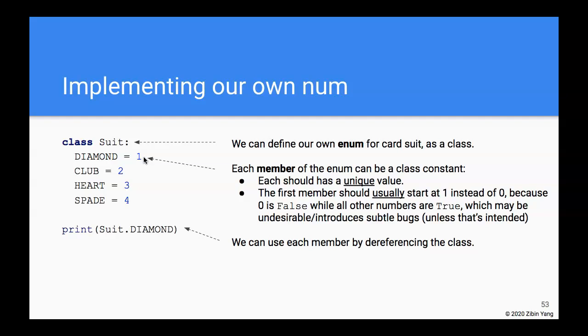The reason for that is 0 actually has a very special meaning that is different from the rest of the numbers. Zero, if evaluated as a boolean, means False, whereas the rest of the numbers are True. So we really don't want diamond to be different in that sense from the rest of the members. Sometimes that is actually useful, so it depends on the use case, but usually we start at 1.